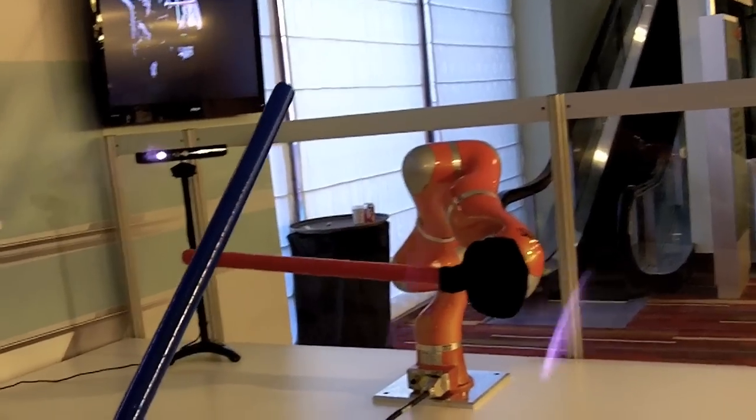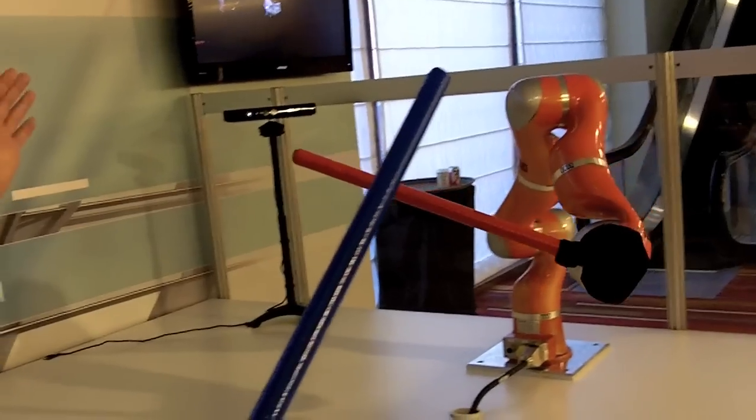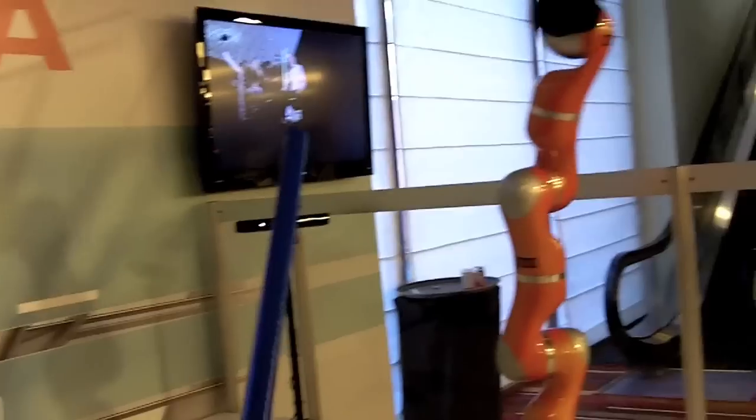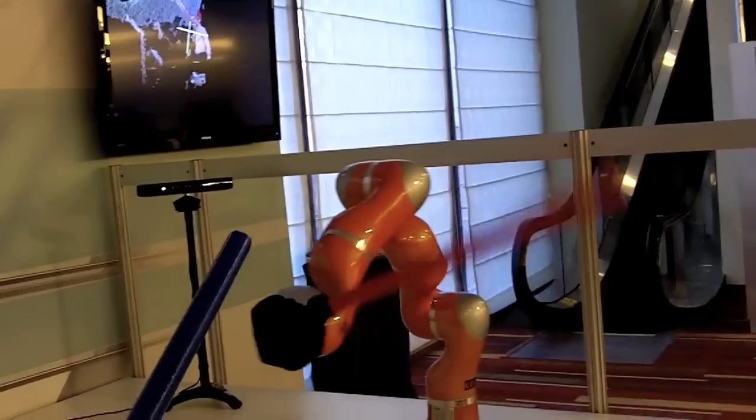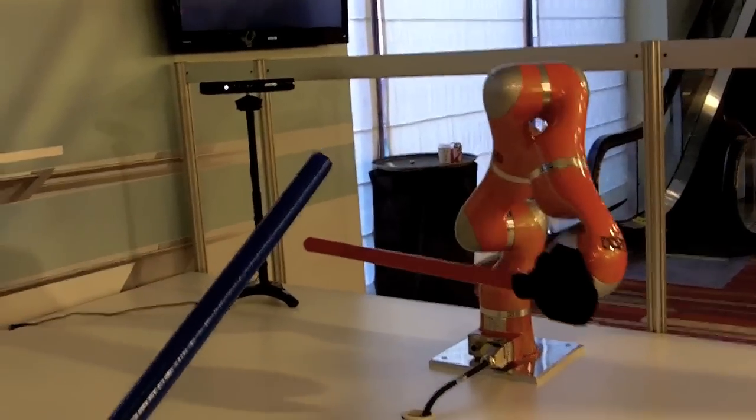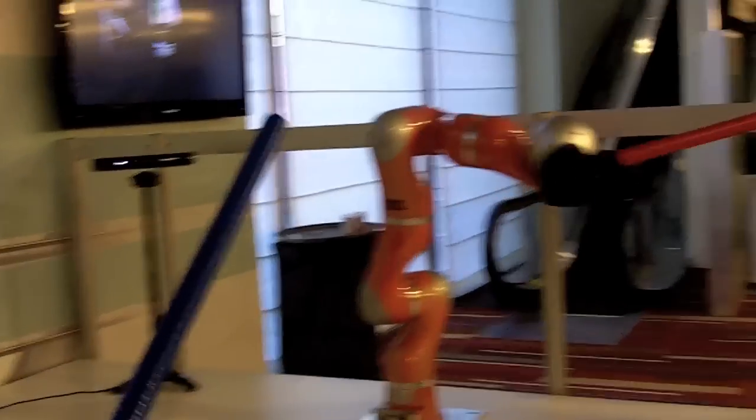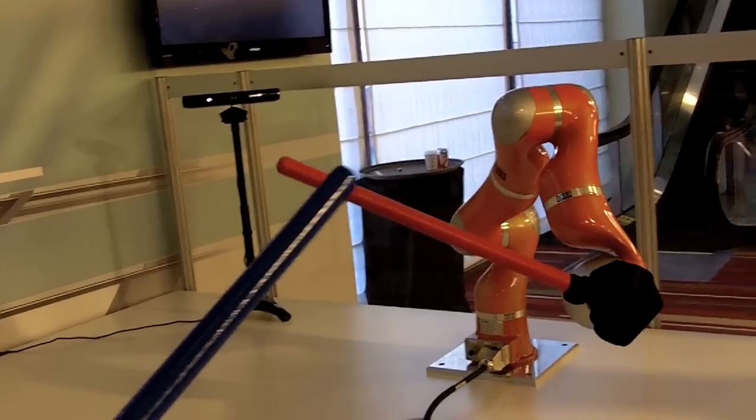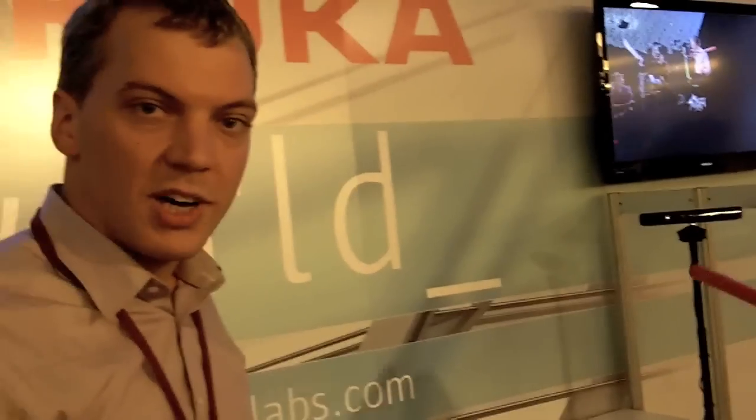And in order to have these high speed motions and these high reactions, we use the reflexes motion libraries, which contain an online trajectory generation algorithm that is able to generate a motion of the robot within one millisecond, such that the robot can instantaneously react to unforeseen events.